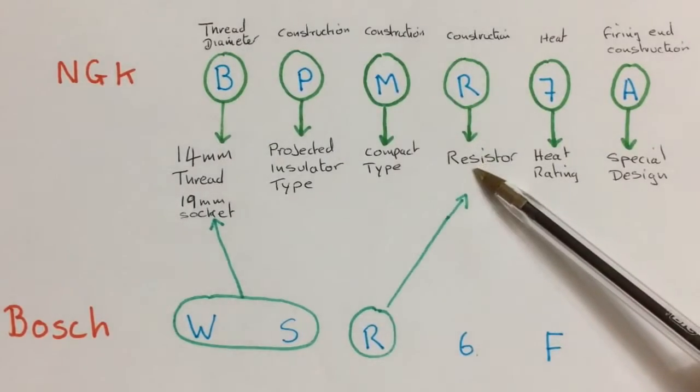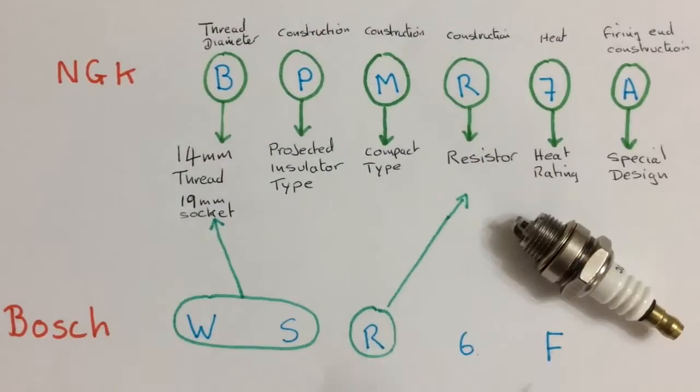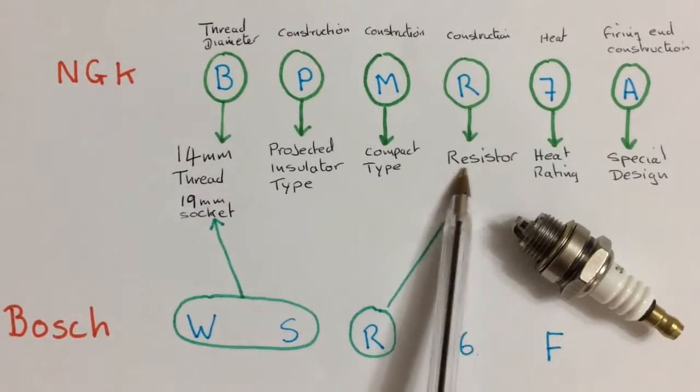R basically means resistor, as does with NGK. So we've got a 14mm thread spark plug with a 19mm socket. And inside the spark plug is an interference resistor.